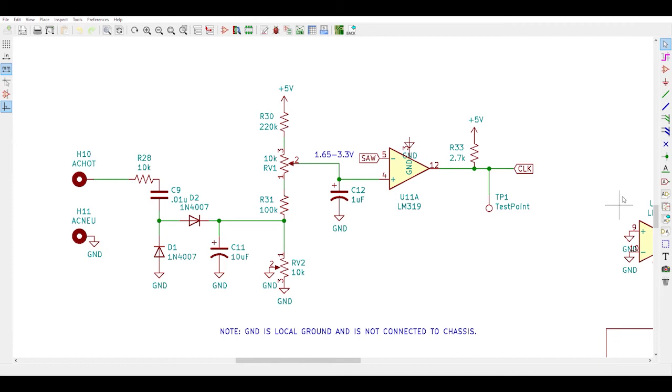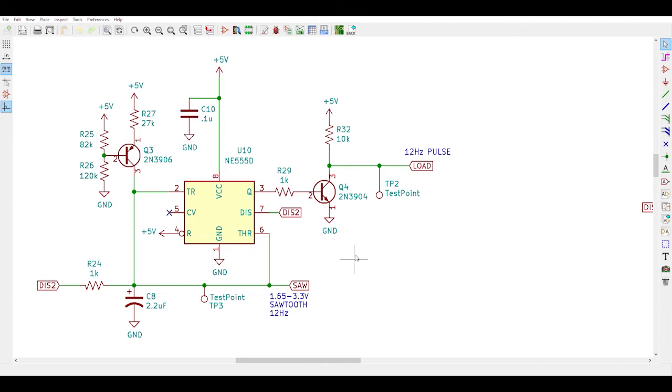Next up is the first of two 555 timers. This one outputs two waveforms. The first is a sawtooth at a frequency of 12 hertz that varies in voltage the same range as the converted DC voltage namely 1.65 to 3.3 volts and is applied to input pin number five of the LM319 comparator.